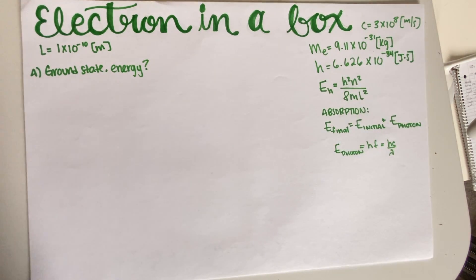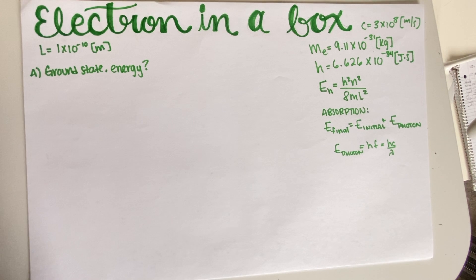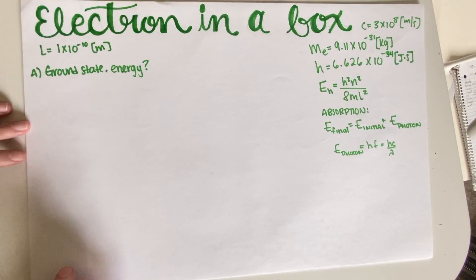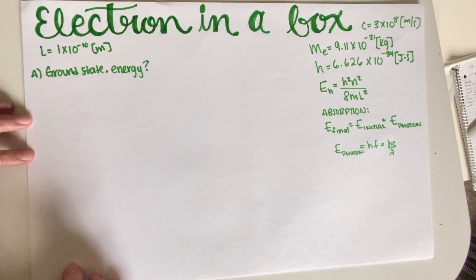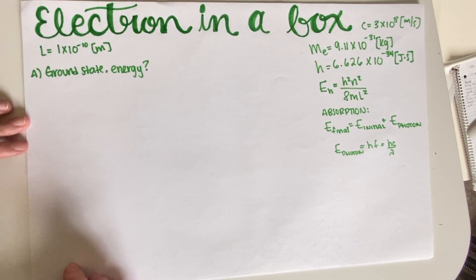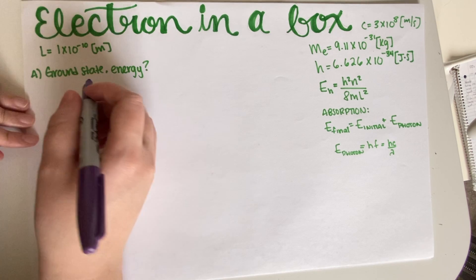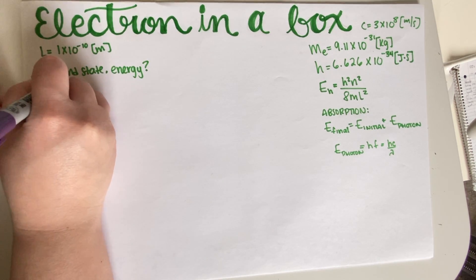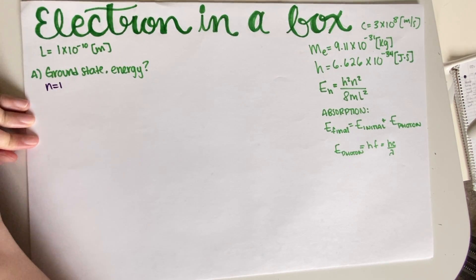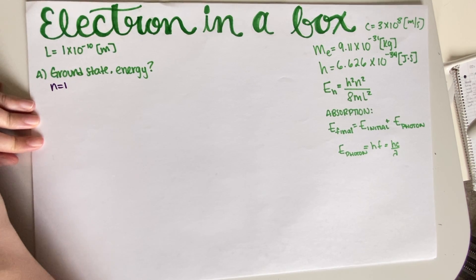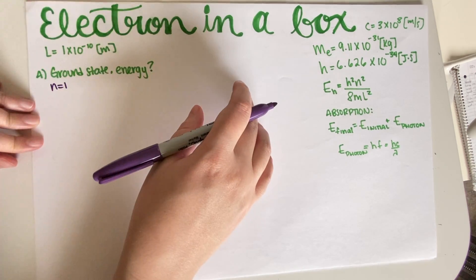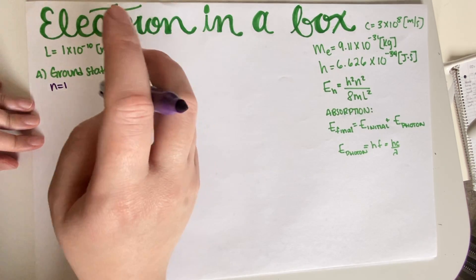First we need to figure out the ground state energy. We just need to recall that ground state means n is equal to 1, because n represents the integers for a particle in a box: 1, 2, 3, and so on.